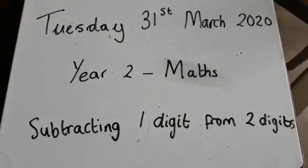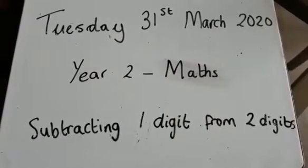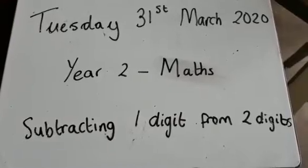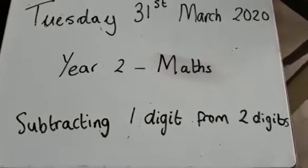Hi everyone, it's Tuesday 31st March 2020. Year 2 Maths, subtracting one digit from two digits.